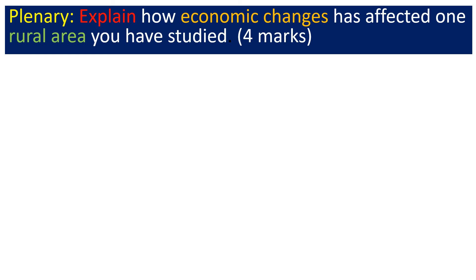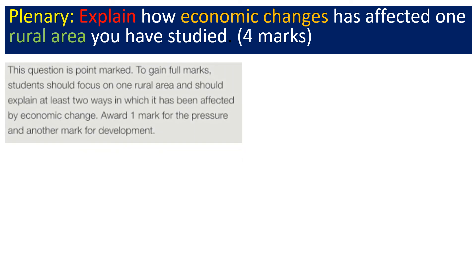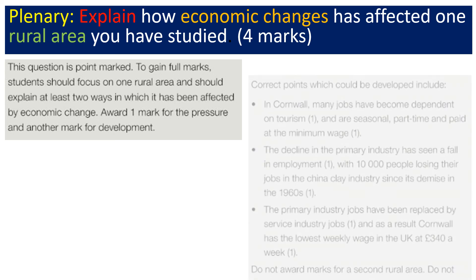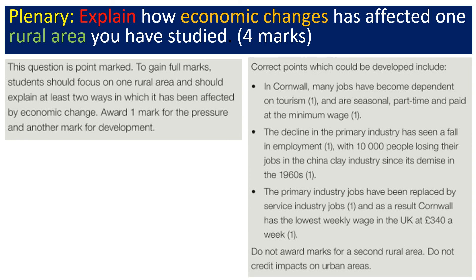Your plenary is a four-mark question: explain how economic change has affected one rural area you've studied. You can use Cornwall or Turling, and you should explain at least two ways in which it has been affected by economic change. Use the information on the board but try to write it in your own words. Submit all of your work on Satchel One and email your teacher if you have any questions. See you again next week.